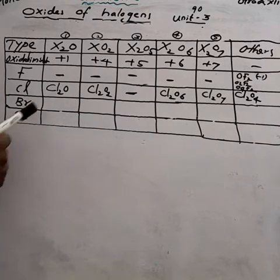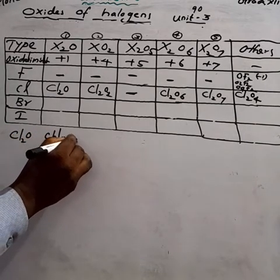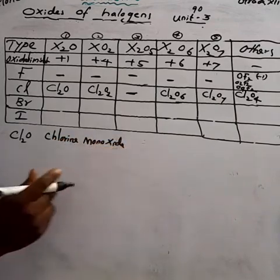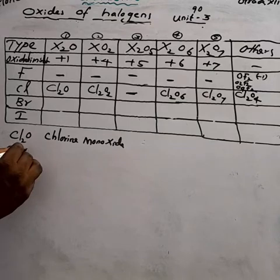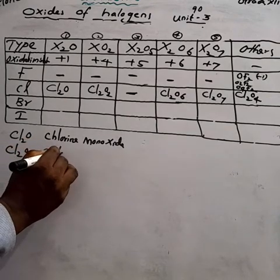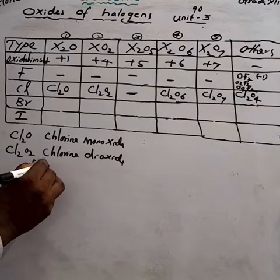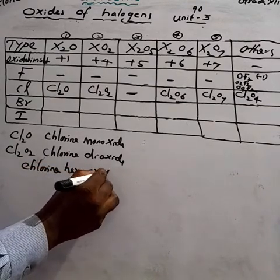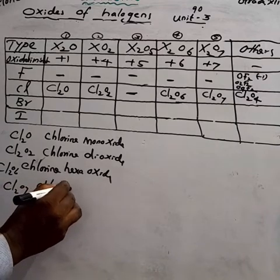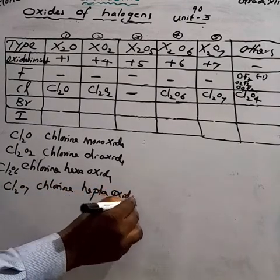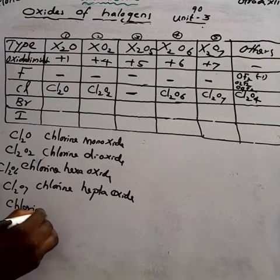Learn the names of the chlorine oxide compounds: Cl₂O is chlorine monoxide, ClO₂ is chlorine dioxide, Cl₂O₆ is chlorine hexoxide, Cl₂O₇ is chlorine heptaoxide, and Cl₂O₄ is chlorine tetraoxide. Please learn these formulas.